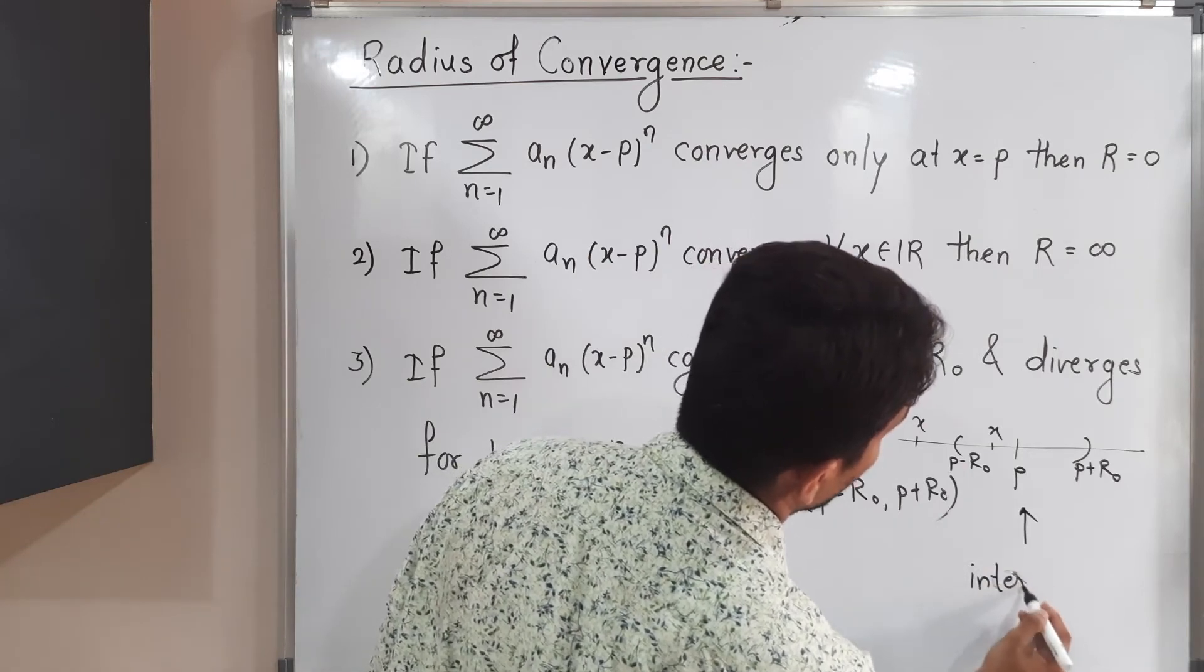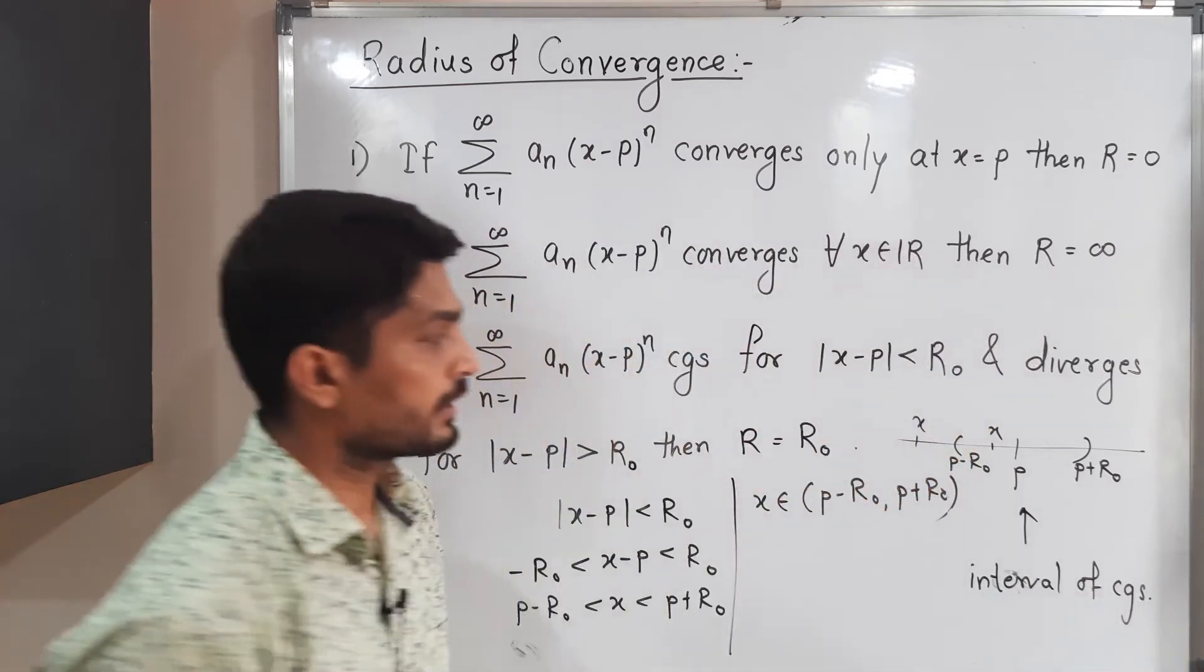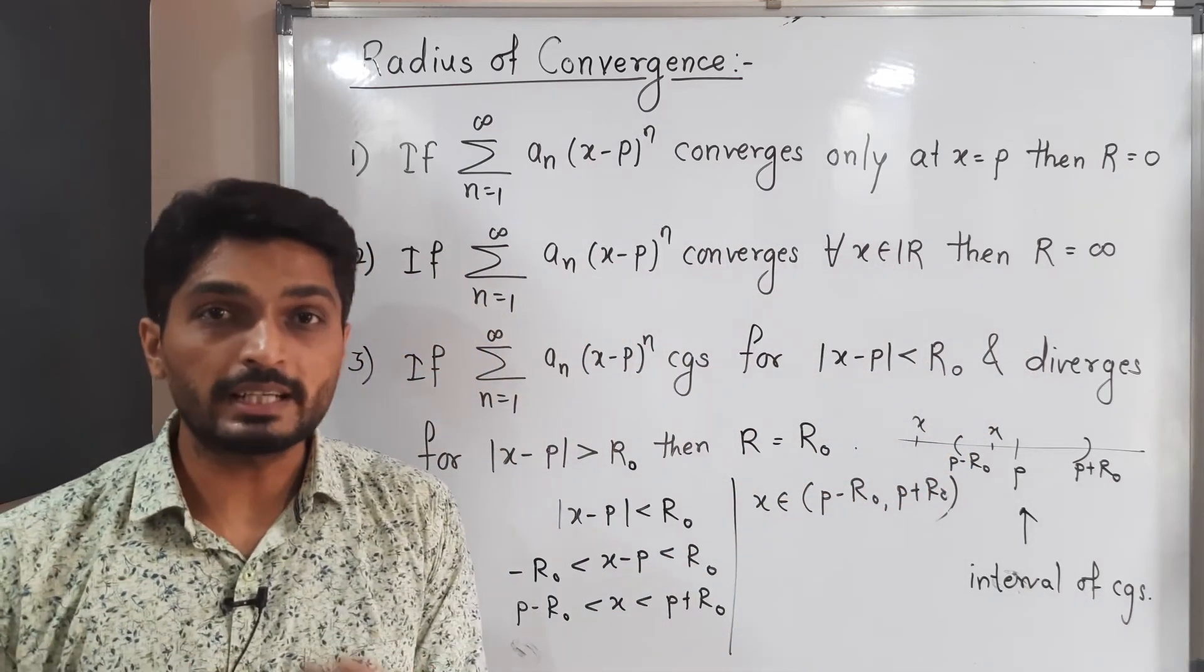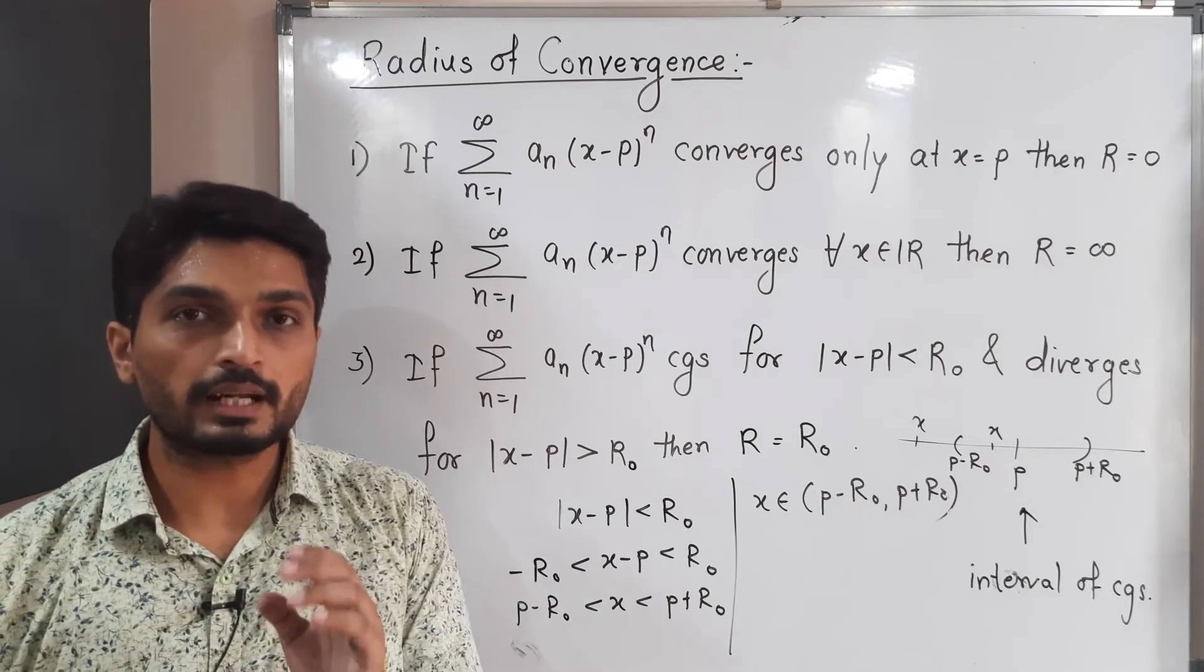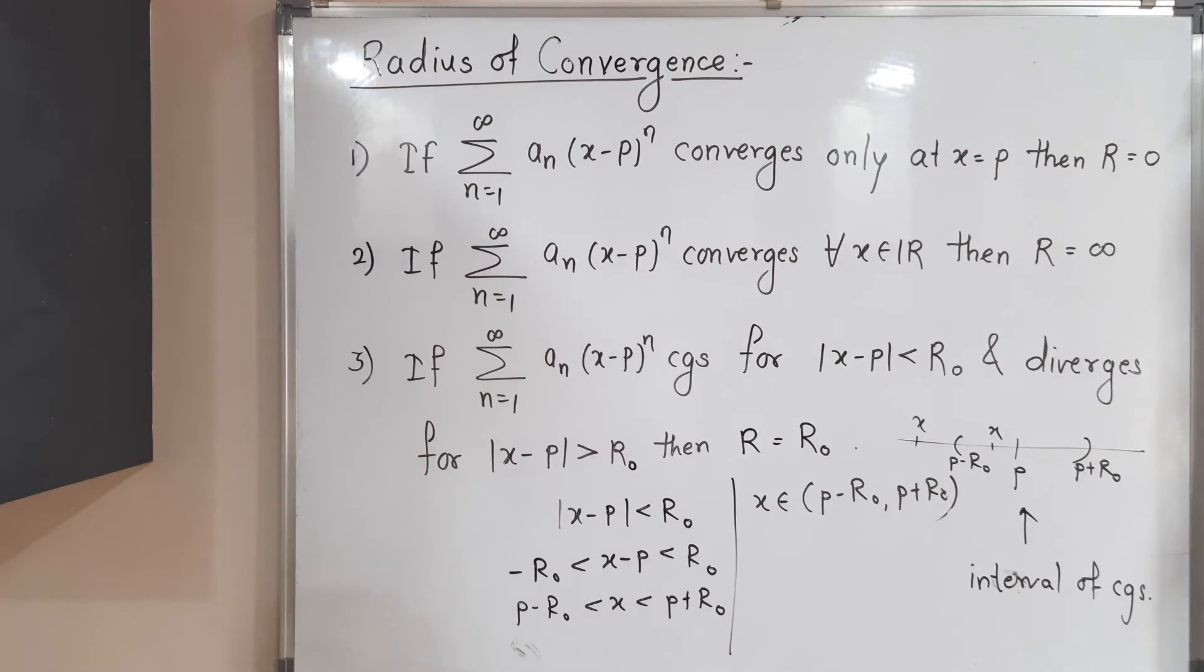So this interval is known as interval of convergence. So this is a concept of radius of convergence. But there are some formulas to calculate radius of convergence. Let us discuss those formulas. First, make a screenshot of it.